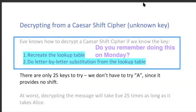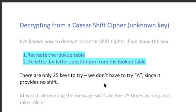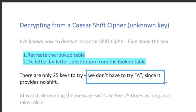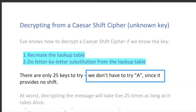If you know how to decrypt the message from one key, you realize there are only 25 keys. There are 26 letters, but there's no way you would use A as a key, since if you send A to A, you haven't shifted the message at all. So when Bob gets the message, it takes him some amount of time, and in the worst case, it takes Eve 25 times as long as it takes Bob.